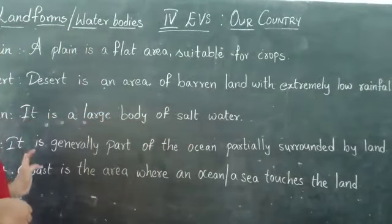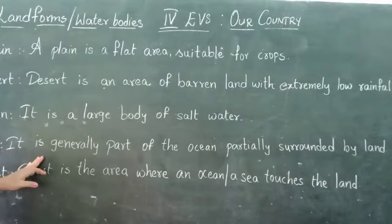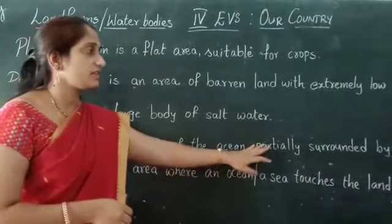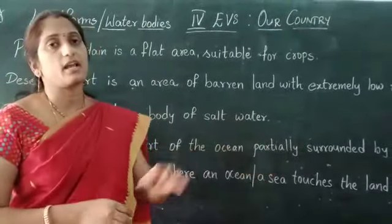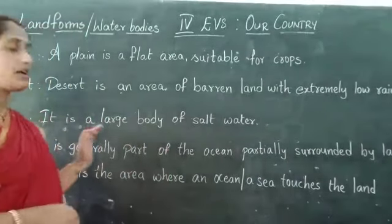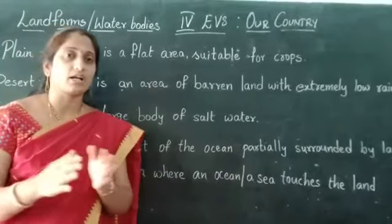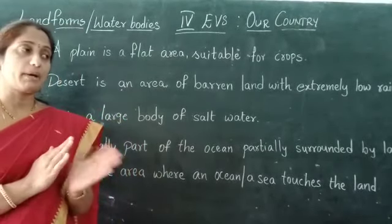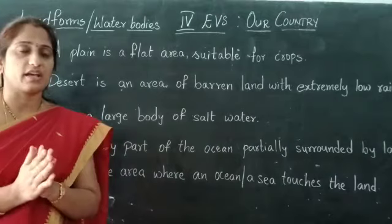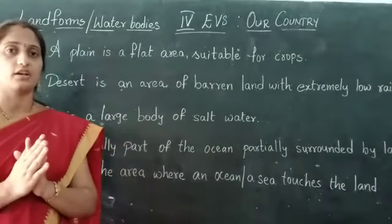Now coming to sea. A sea is generally a part of the ocean, partially surrounded by land. Sea is a part of an ocean. When compared to an ocean and a sea, the sea is smaller than the ocean.